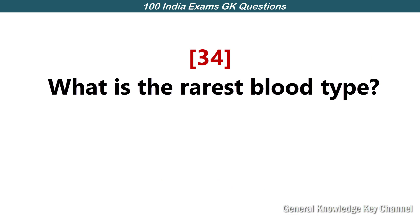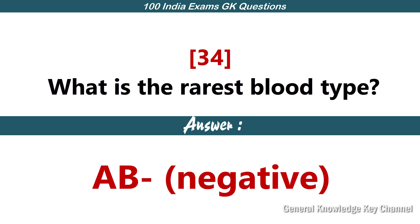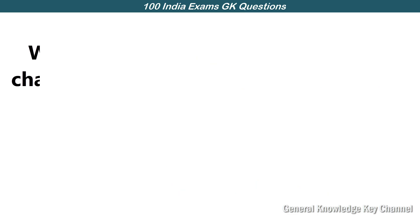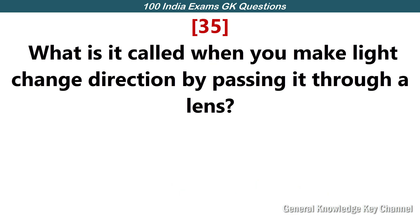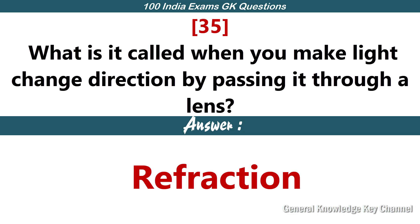What is the rarest blood type? Answer: AB negative. What is it called when you make light change direction by passing it through a lens? Answer: Refraction.